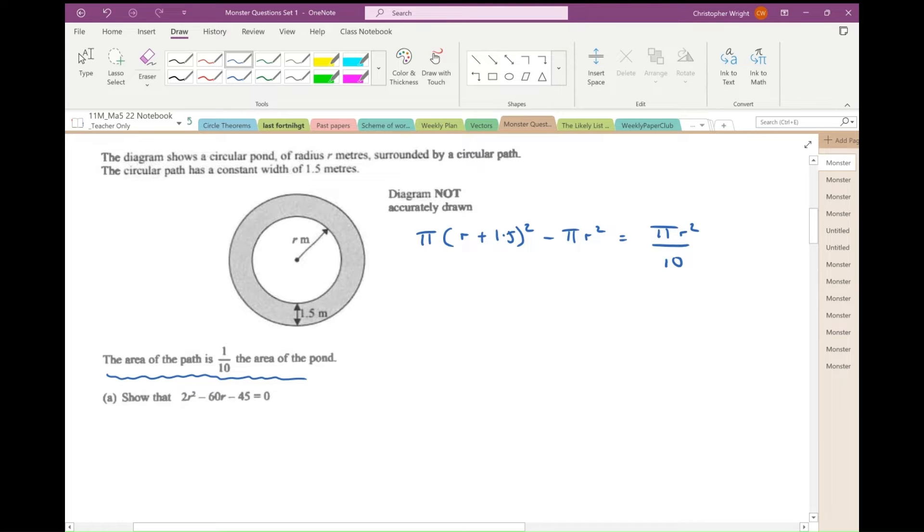I'm going to divide everything by pi, and this gives (r + 1.5) squared, which is (r + 1.5) times (r + 1.5) minus r squared, because I'm dividing by pi, and that equals r squared over 10.